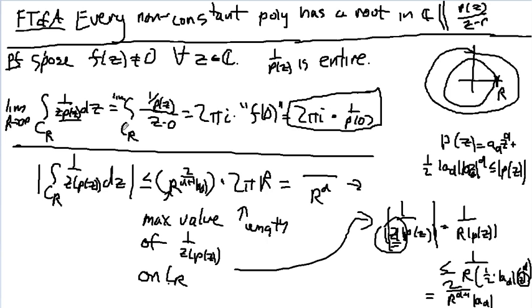So this integral, if you integrate around a circle of radius r, you get 1 over p of z, which is going to be entire. It's holomorphic everywhere, over z minus 0, which by the Cauchy integral formula is just going to be 2 pi i times 1 over p of 0.